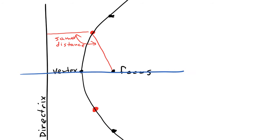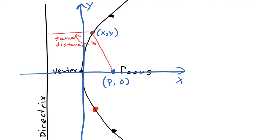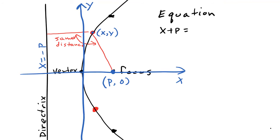We put a coordinate system on our parabola with the origin at the vertex, just like last time. This allows us to give each point coordinates (x, y). The focus, p spaces to the right of the origin, has coordinates (p, 0). The directrix, p spaces to the left of the origin, has the equation x equals negative p. From this we can write an equation: the distance between the point (x, y) and the directrix equals the distance between that same point and the focus. The distance between the point and the directrix is horizontal, so we use the x-coordinates. The point is x spaces to the right of the y-axis, the directrix is p spaces to the left of the y-axis, so the total distance between the directrix and the point is x plus p. The distance between the point and the focus is found using the distance formula.